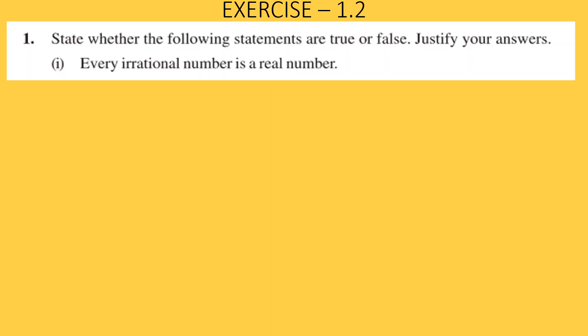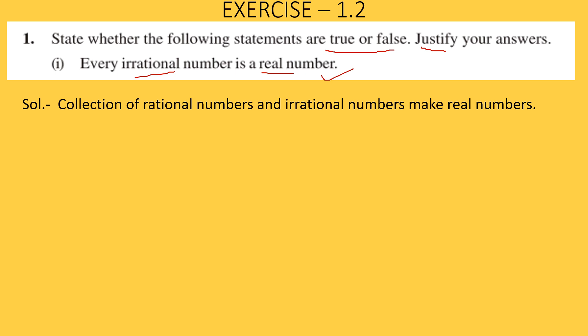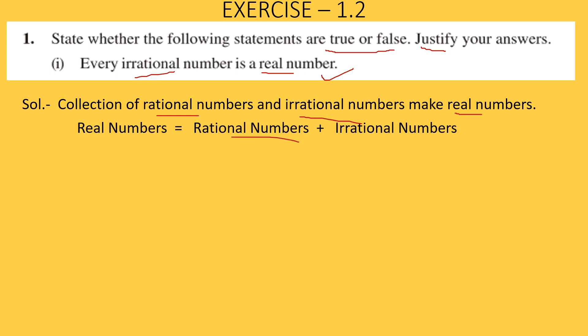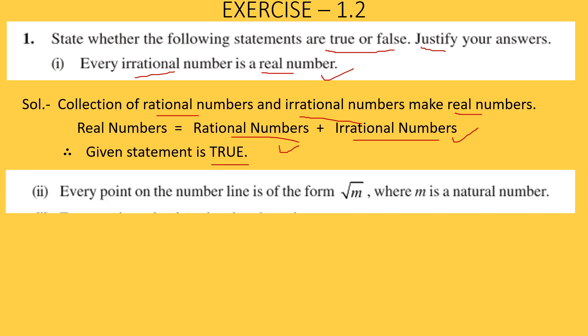Question number 1 says: state whether the following statements are true or false and justify your answer. The first statement is: every irrational number is a real number. We have discussed that real numbers are the collection of rational numbers as well as irrational numbers — real numbers include both rational and irrational. Therefore this statement is true.